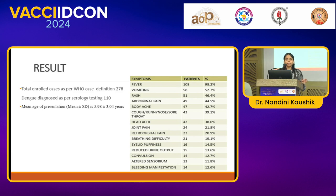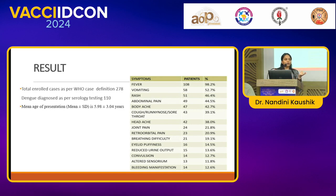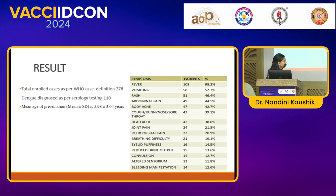The main presenting complaints were fever and vomiting. A notable shift observed during our study was that a lot of the patients who had serology positive also presented with upper respiratory tract-like infections, having symptoms of cough, runny nose, and sore throat. We also had many individuals admitted without any warning signs of dengue.